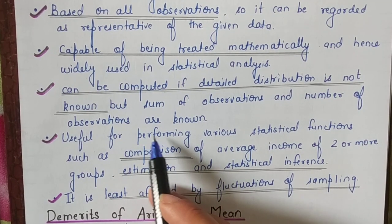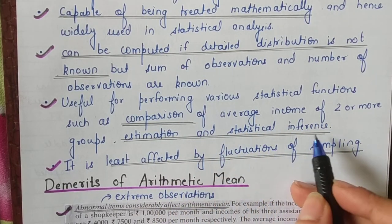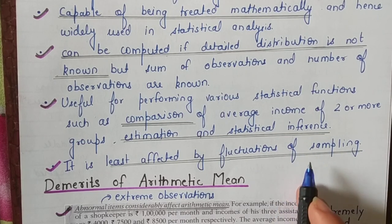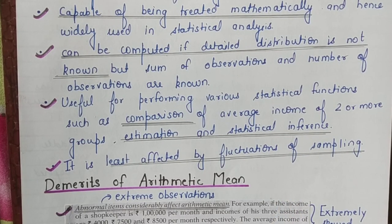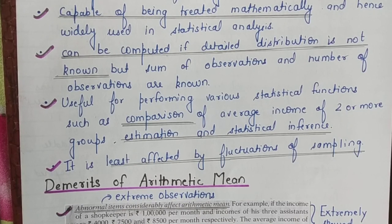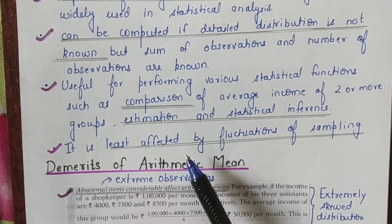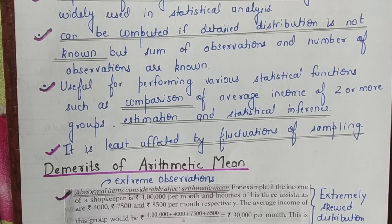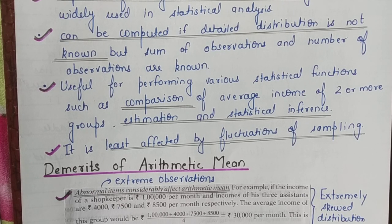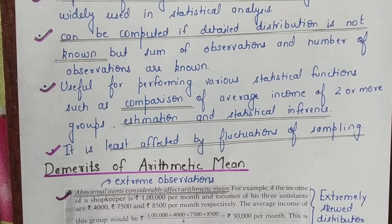The next merit: arithmetic mean is useful for comparing various statistical functions, such as comparison of average income of two or more groups, estimation, or statistical inference. We can compare the mean of two or more datasets — for example, comparing average income of different countries or different income groups, or we can estimate the future or draw some inference from certain facts. Lastly, it is least affected by the fluctuations of sampling. If you take sample A and then sample B, the mean will be least affected — there can be minor effects, but it is not a major effect of sampling.